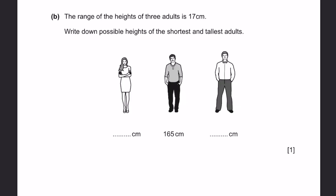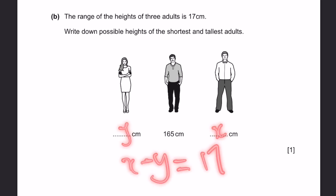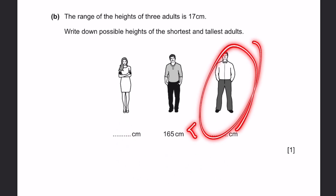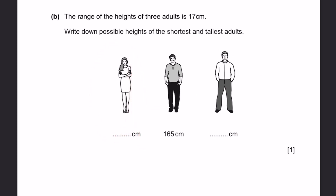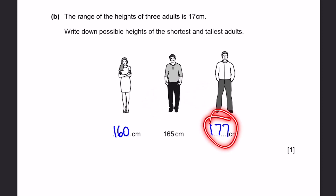Question 28B. The range of the heights of three adults is 17 centimeters. Give possible heights for the shortest and tallest adults. Let x be the tallest and y the shortest — x minus y must equal 17. Also x must be greater than 165 and y must be less than 165. For example: 160 and 177. Any values satisfying those conditions are correct.